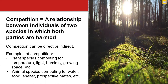Competition is a relationship between individuals of two species in which both species are harmed as they attempt to utilize the same resources. These resources are oftentimes in limited supply. For example, grass growing on a steep mountainside eaten by both mountain goats and sheep. Competition can be direct or indirect. An example of direct competition would be two different species of birds that are both predators competing for fish as prey in a lake.